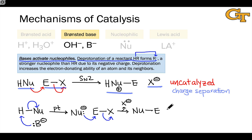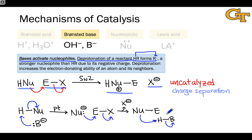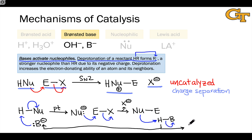To complete the catalytic cycle, we regenerate the base and generate the H-Nu-E⁺ product. This is done by a proton transfer from the conjugate acid of the catalyst to what becomes the positively charged product — the nucleophile deprotonates the conjugate acid of the catalyst. This step regenerates B⁻ so it can return and react with another molecule of substrate to restart the cycle, and it also generates the positively charged product.